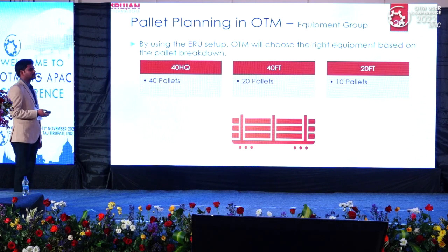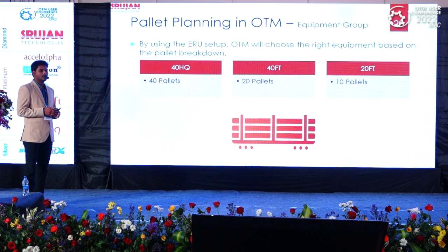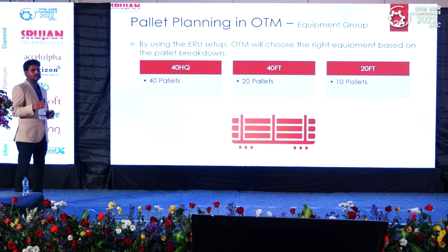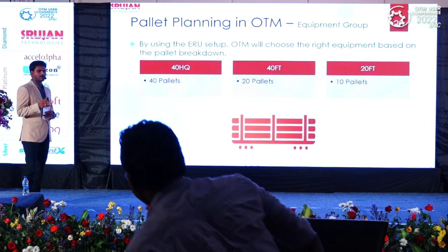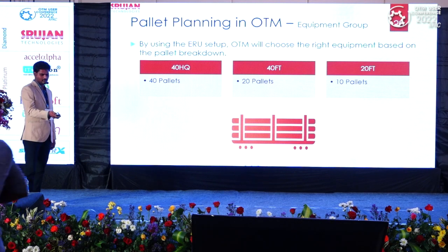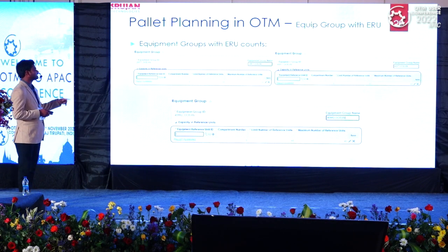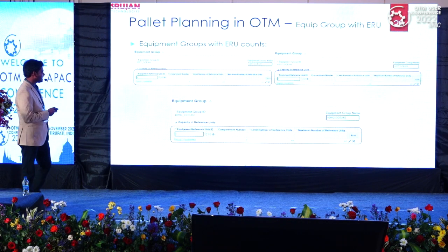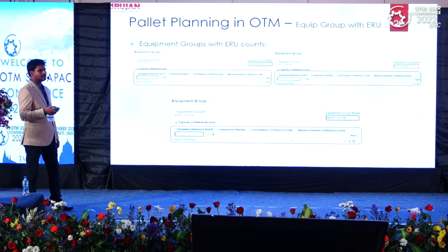The high-level requirement: if an order has 0 to 10 pallets, it should pick the 20-foot container; greater than 10 and up to 20 pallets should pick the 40-foot container; and 20 to 40 pallets should pick the 40 high cube. In the equipment group ERU configuration, the 20-foot is restricted to a maximum of 10 pallets, the 40-foot to 20 pallets, and the 40 high cube to 40 pallets. Based on this ERU restriction during planning, the system will pick the right equipment group.